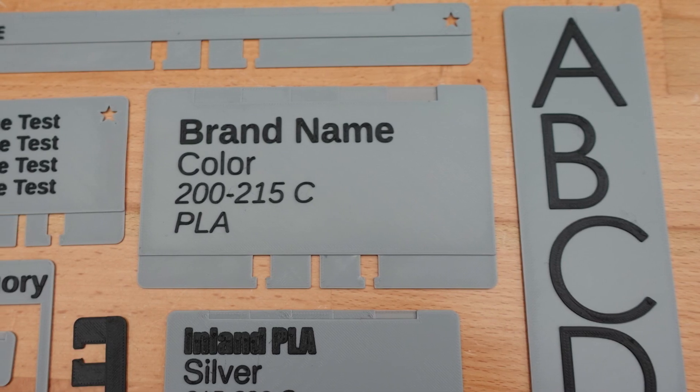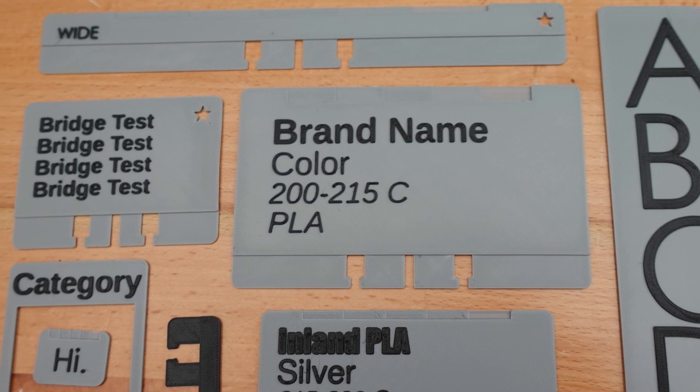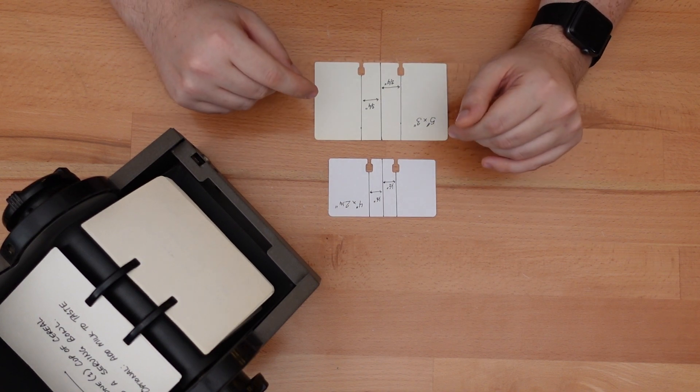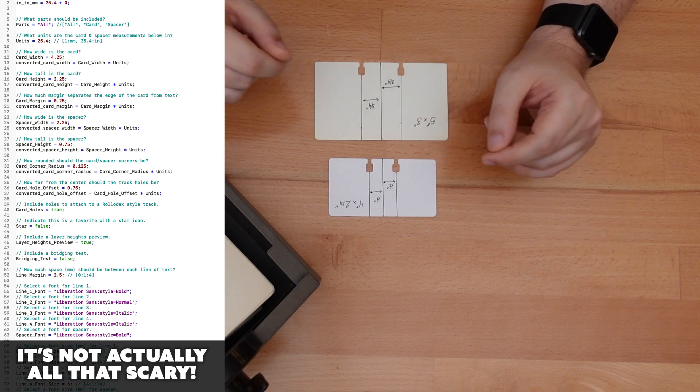As you can see from all these designs, I was serious about making this style flexible. You can even disable the Rolodex holes entirely and use this as a generic swatch system. And since this is an OpenSCAD project, this can be adapted even further if you dare venture into the code.